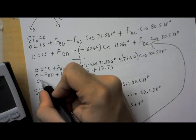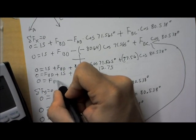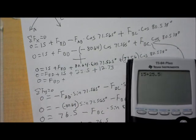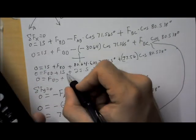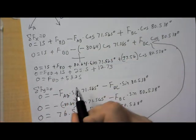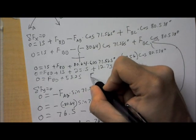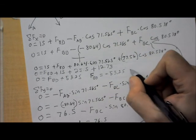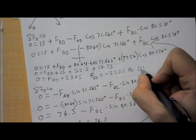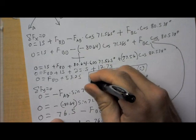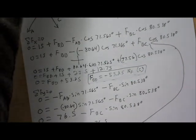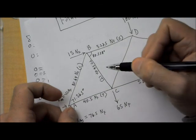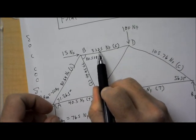Alright. And so, 0 equals FBD plus, we've got to add all those up, 15 plus 25.5 plus 12.75. And we get 53.25. And then we subtract that over. And we have FBD equals negative 53.25 newtons of force. So, that is compression. And we circle that. Alright. And so, we fill those in on our final answer. FBC, we fill in as 77.56 newtons of force. And that's tension. And FBD, 53.25 newtons of force. And that's compression.